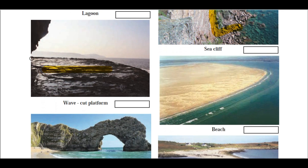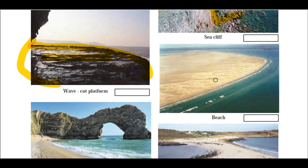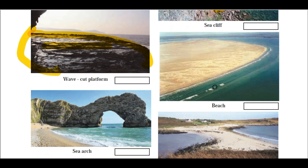The wave cut platform is a stretch of rocky portion where sea caves form and the area ahead looks like a platform cut by sea waves — hence it is known as wave cut platform, which is again an erosional landform. Here you can see the beach — many of you may have visited beaches near Mumbai, Goa, or other places in India. The beach is a depositional landform.